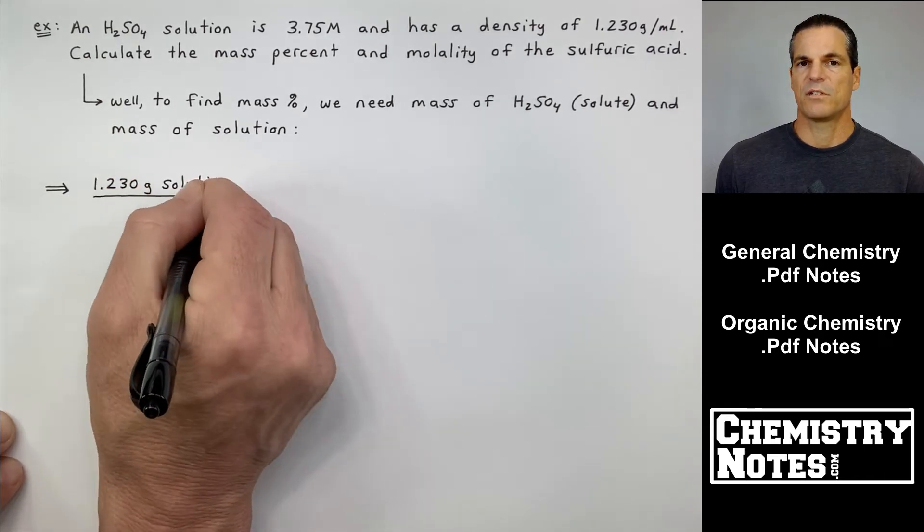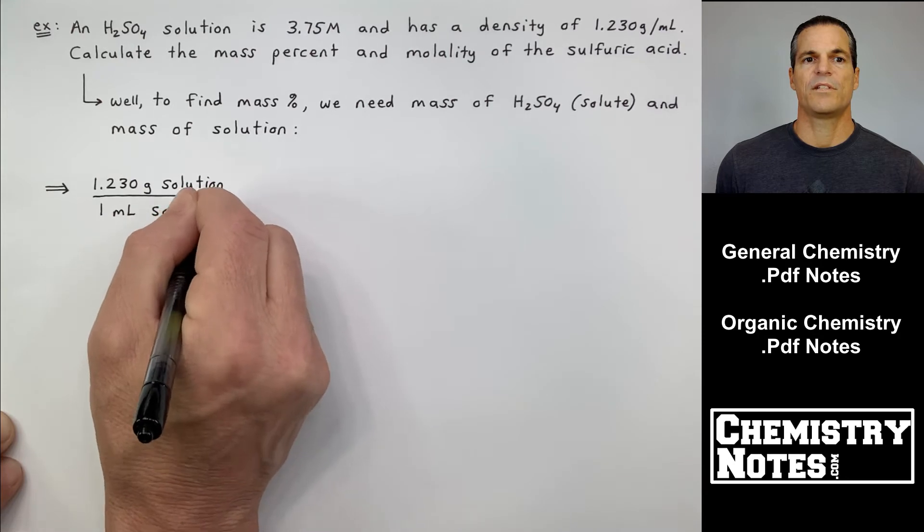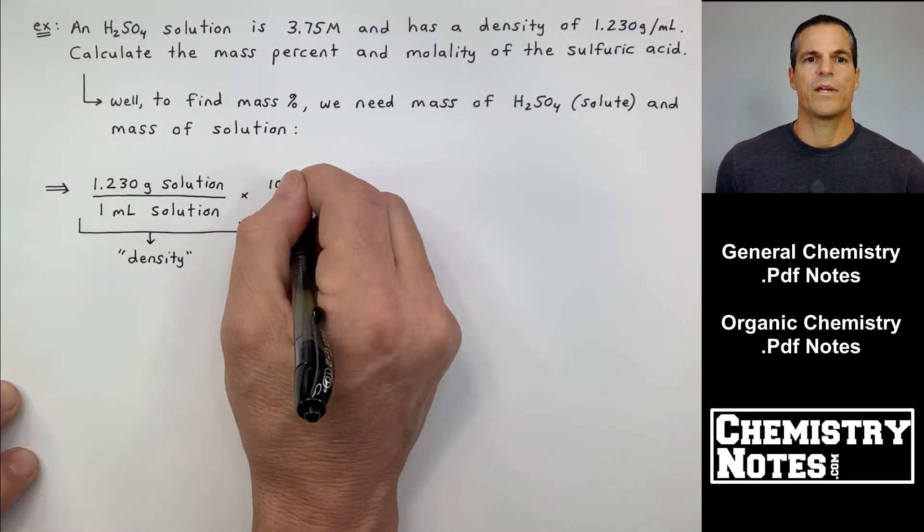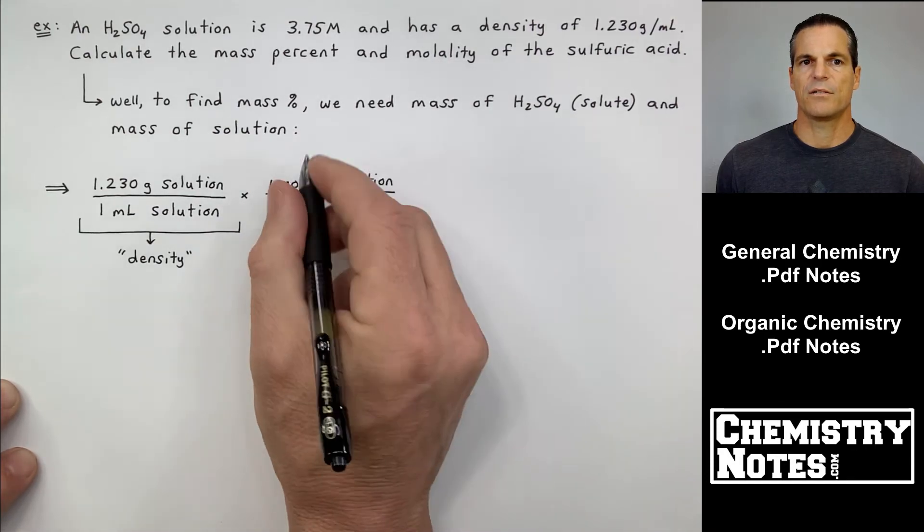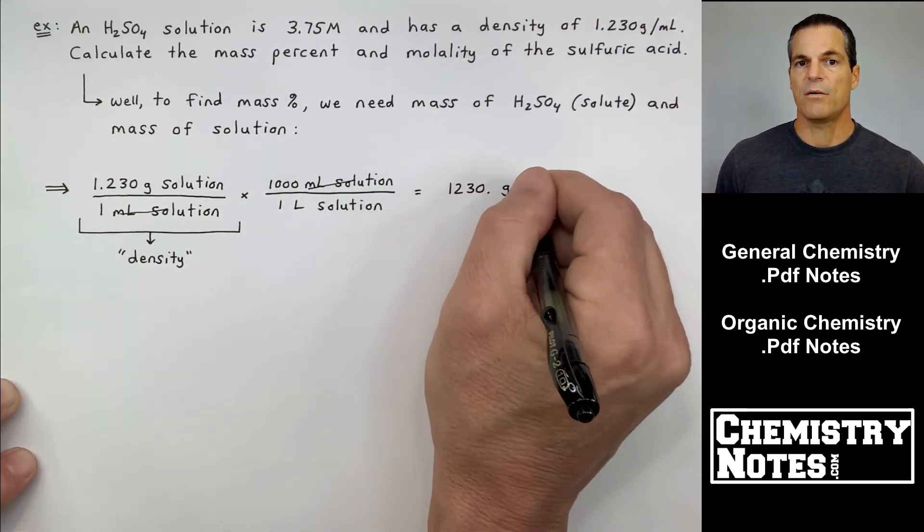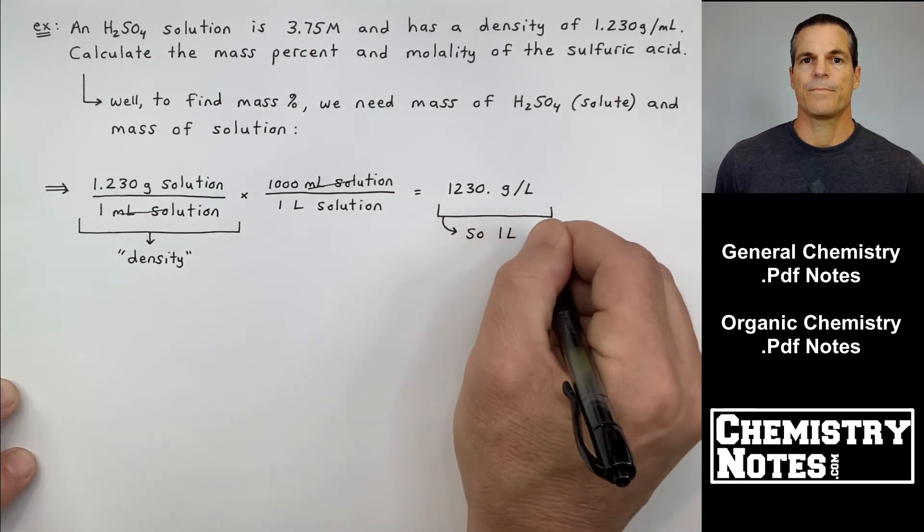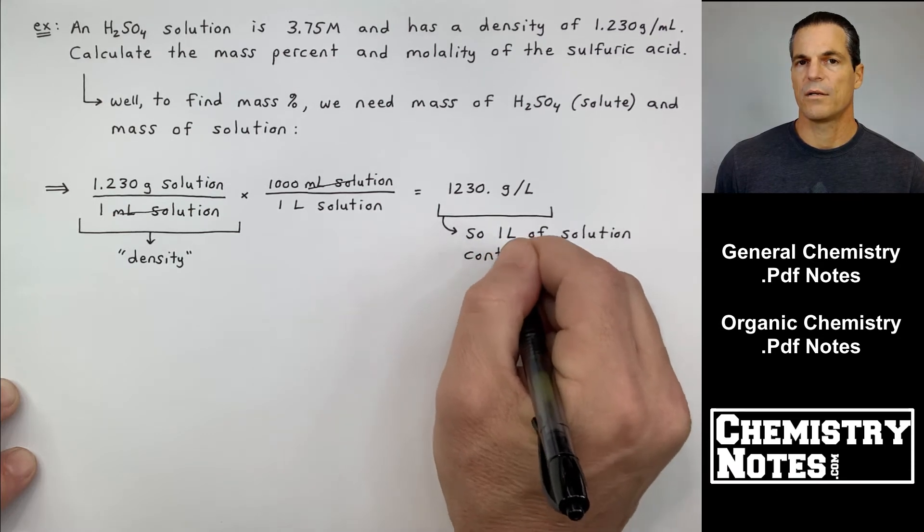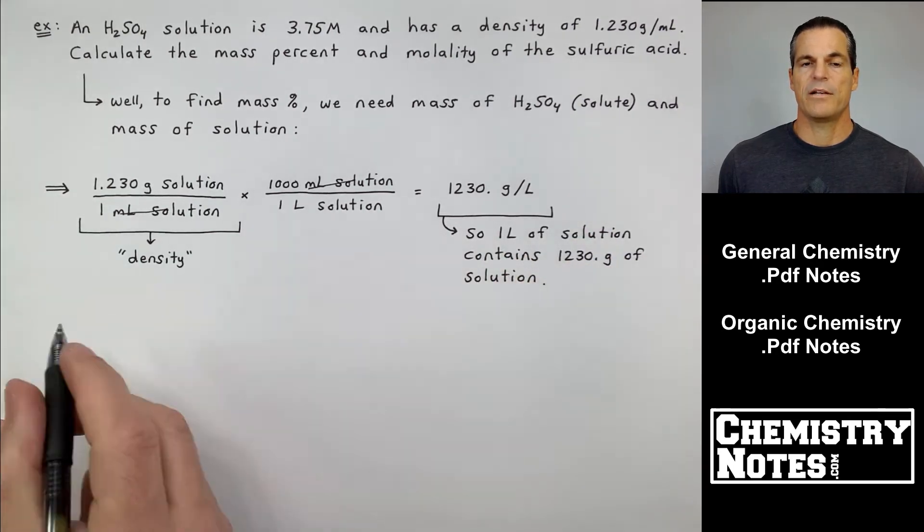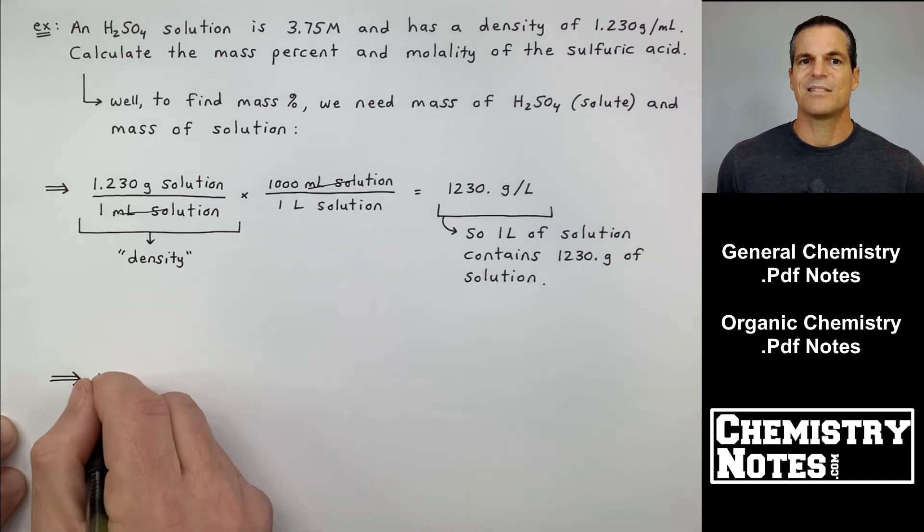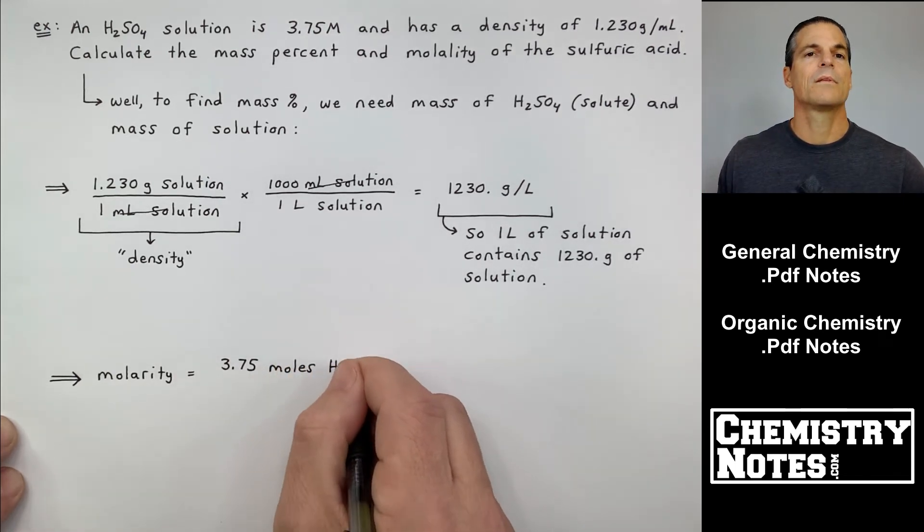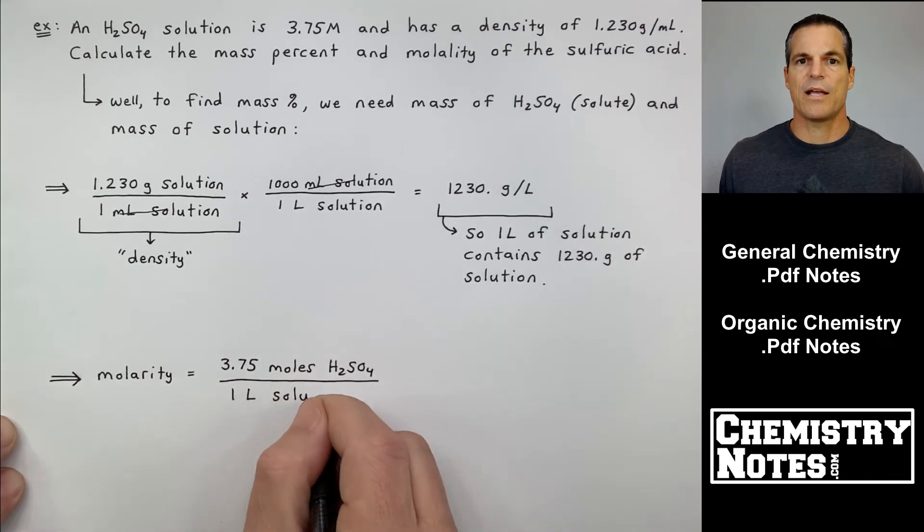They're giving us the density of the solution. We got 1.230 grams of solution for every one milliliter of solution. That's the density. So we can convert milliliters to liters using dimensional analysis. I got 1,000 milliliters on the top, one liter on the bottom. Now I have 1,230 grams of solution per one liter. Why did I do that? Well, they're giving me the molarity, 3.75 molar, that big M, but that's the same thing as 3.75 moles of H2SO4 solute per one liter of solution.